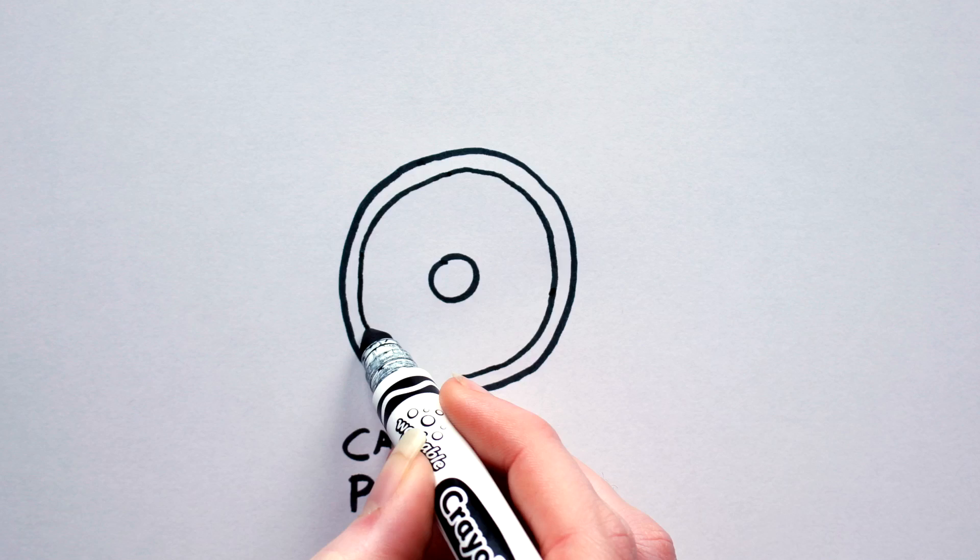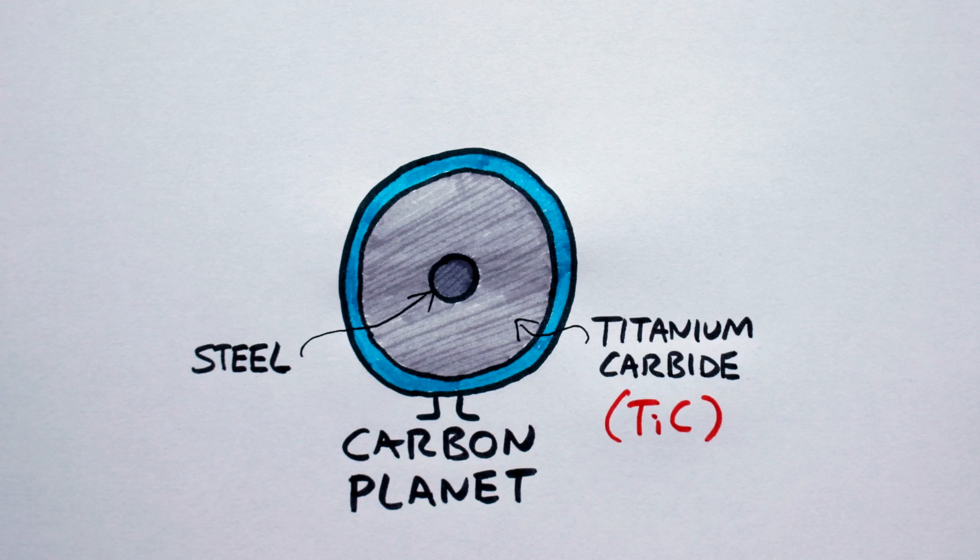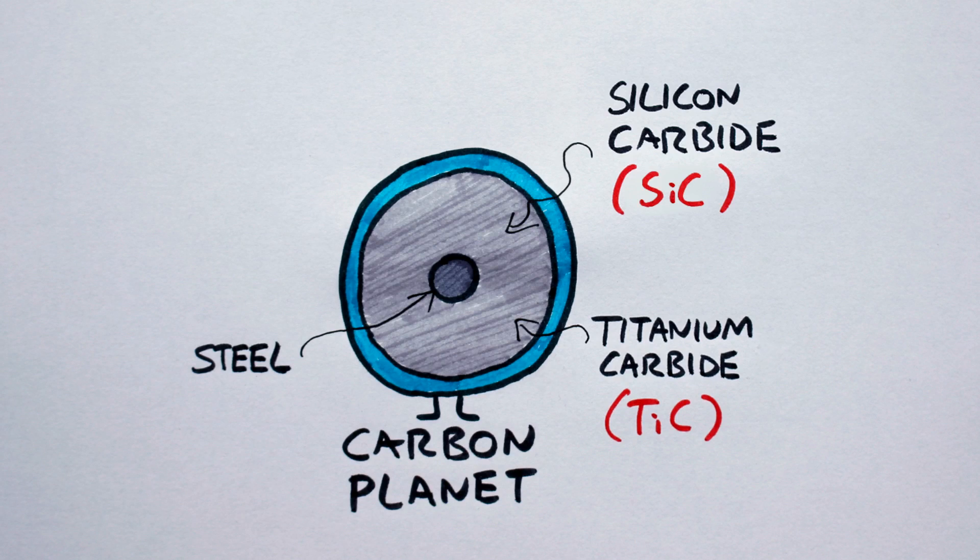Internally, carbon planets would look much like regular terrestrial planets except made of compounds of carbon, as shown. Check out the steel core and the substratum of diamond. Is it just me, or is diamond common as muck on exoplanets?